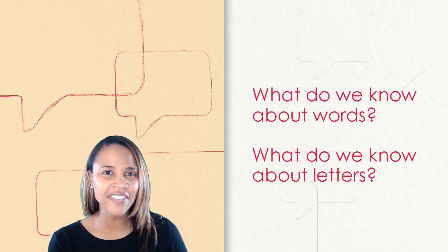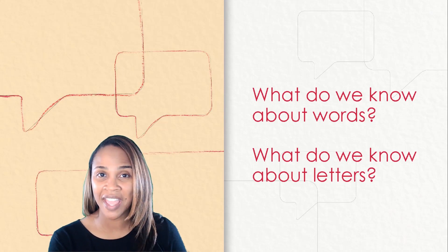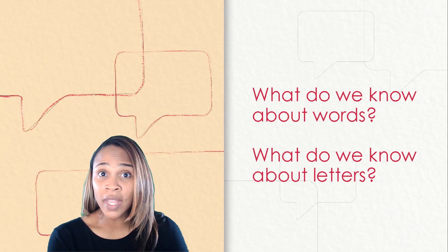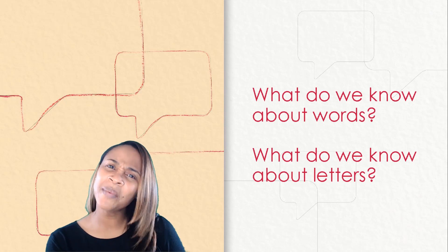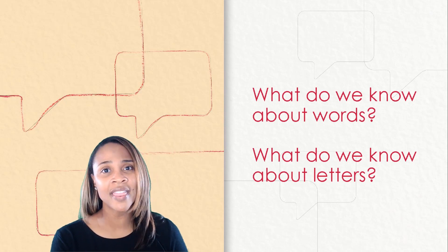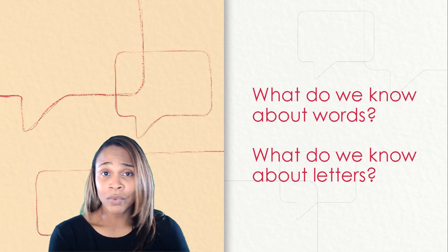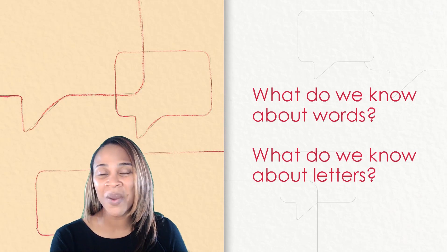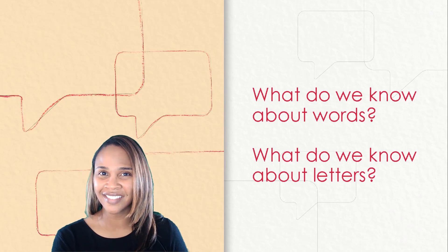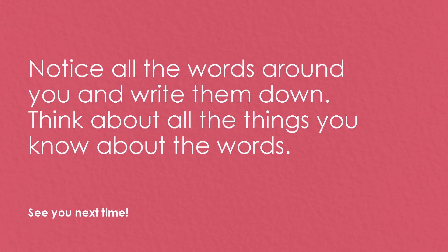Closing Reflection. Let's reflect on our lesson for today. I have two questions that I want you to think about. My first question is: what do we know about words? We know that words are made up of letters, and we also know that words tell us what things are. My second question is: what do we know about letters? We know that letters make words. Awesome job, great thinking. Notice all the words around you and write them down. Think about all the things you know about the words. It's time to say goodbye. I hope you enjoyed listening to my story and learning more about names. Thanks for joining me. I will see you next time.